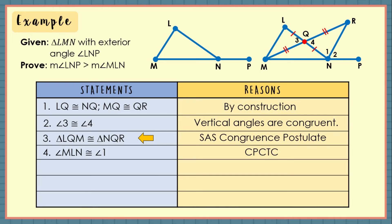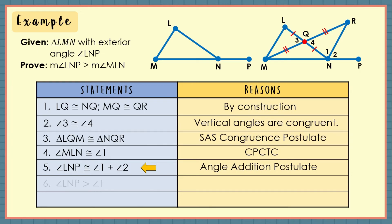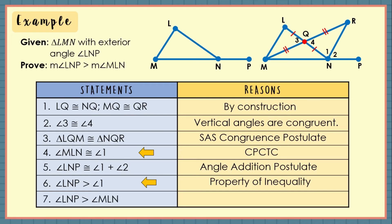For number 5, from the illustration, angle LNP consists of the two adjacent angles 1 and 2, so the measure of angle LNP is the sum of these two angles. Number 6, using statement number 5, angle LNP is greater than angle 1 by the property of inequality. For statement number 7, using statements 4 and 6, since angle 1 is congruent to angle MLN, substitute angle 1 by angle MLN to form the inequality: angle LNP is greater than angle MLN — by the substitution property of equality.